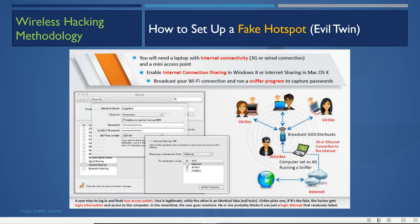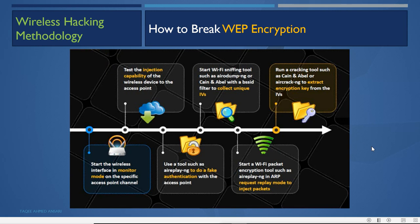The attacker starts sniffing software and sniffs all victim data. Without doing any active attack, the attacker performs a man-in-the-middle and can do many things from that position. If the attacker wants to connect to the corporate network, the attacker needs to authenticate to the corporate access point, because the corporate network may be using security.